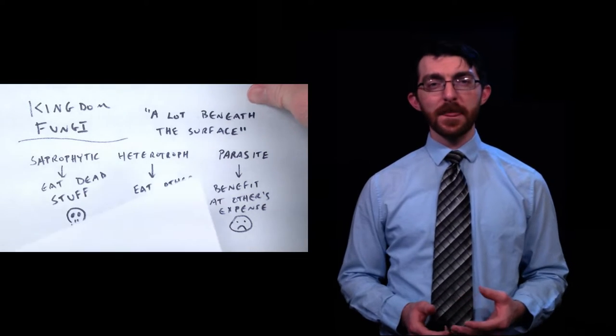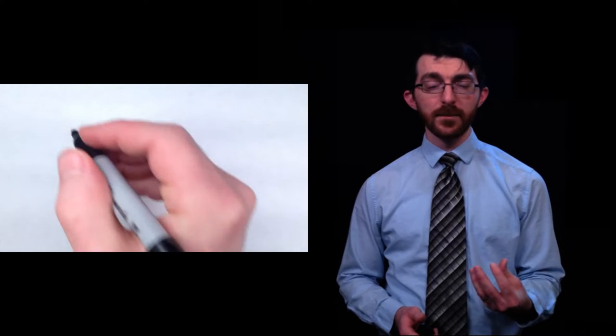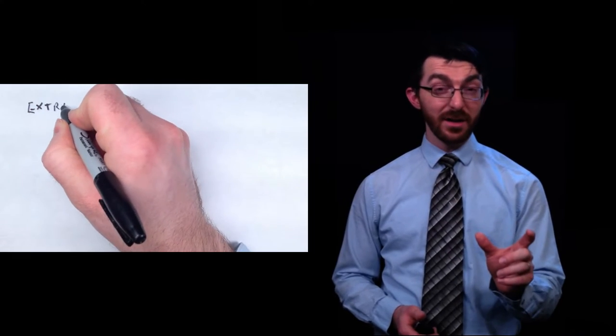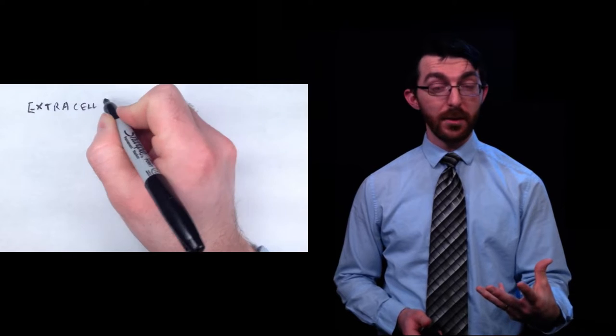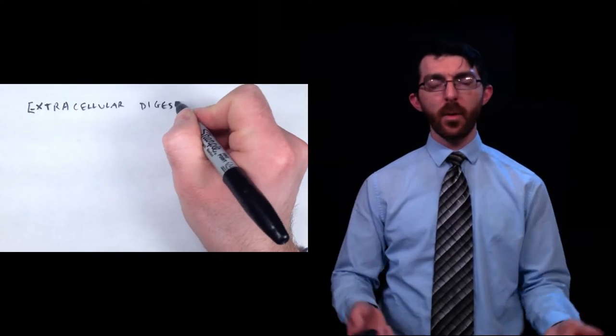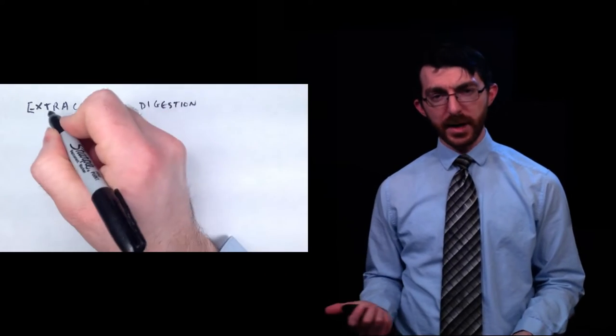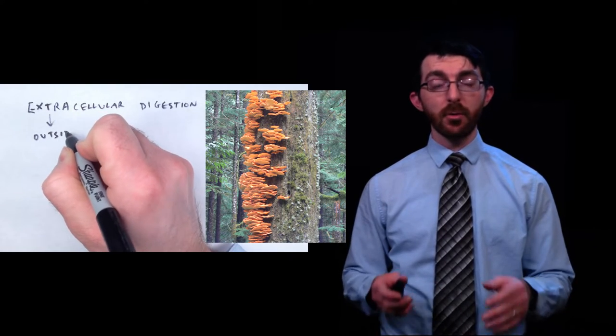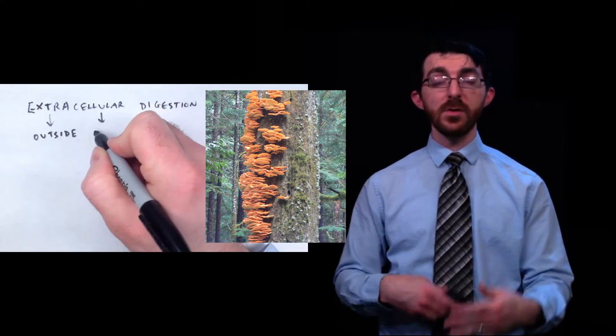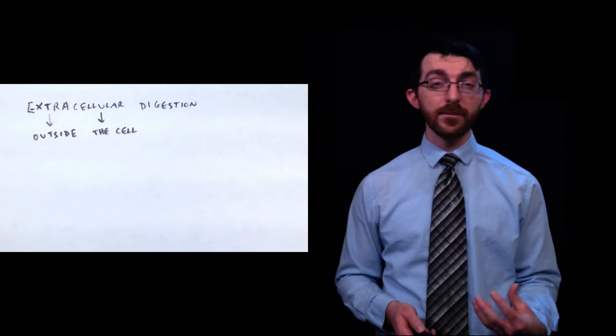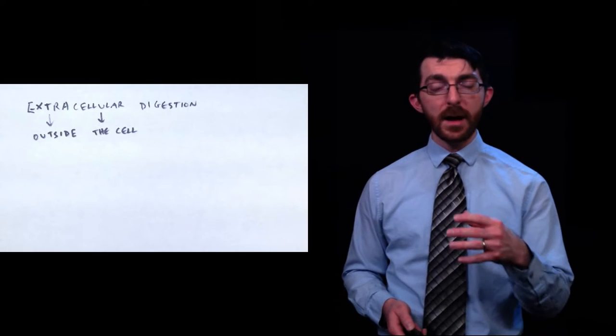The fungi do something called extracellular digestion. Cellular, of course, referring to cells, but the extra means outside of. So it digests things outside of its body. Here's how that works. First, kind of like in this picture, fungus will grow on its food. It will grow on the food source that it's going to be using to grow. Then it secretes a digestive chemical on it before it's ingested.